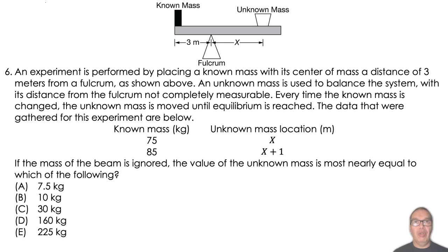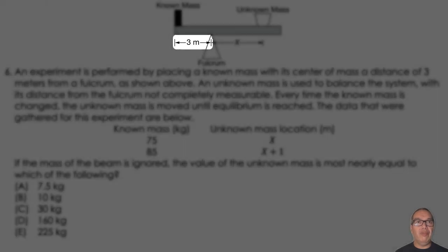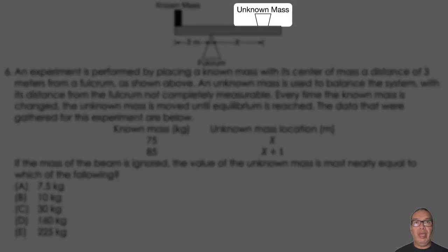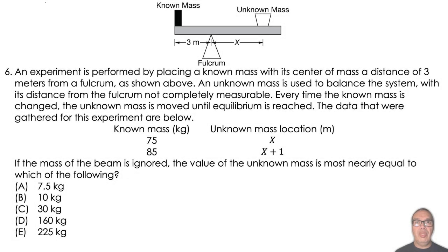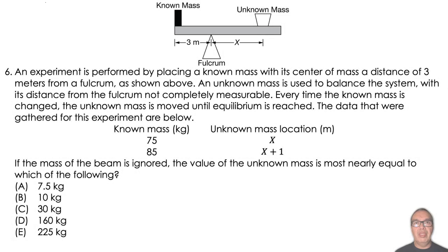An experiment is performed by placing a known mass with its center of mass at a distance of 3 meters from a fulcrum, as shown above. An unknown mass is used to balance the system, with its distance from the fulcrum not completely measurable. Every time the known mass is changed, the unknown mass is moved until equilibrium is reached. The data that were gathered for this experiment are below.